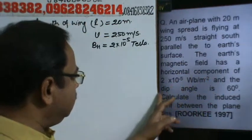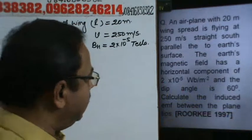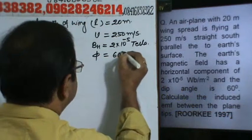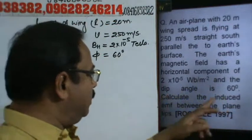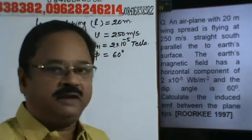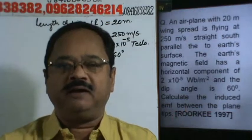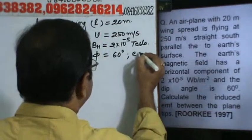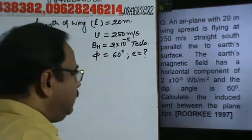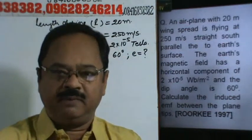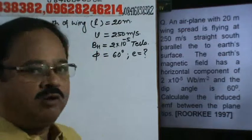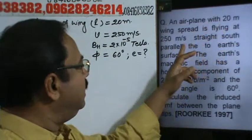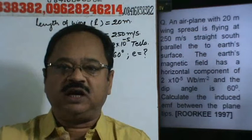The dip angle phi is equal to 60 degrees. Calculate the induced EMF between the plane tips. You have to find the induced EMF between the tips of the plane. The aeroplane is flying straight south.